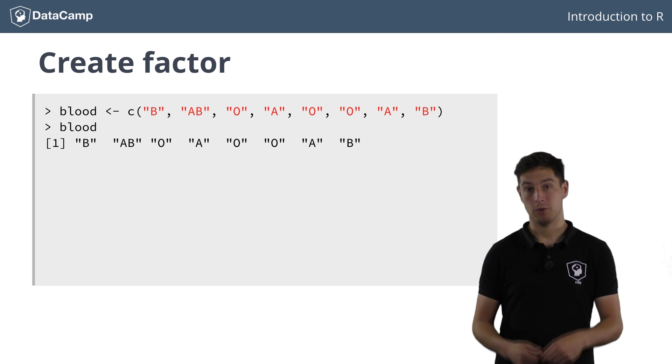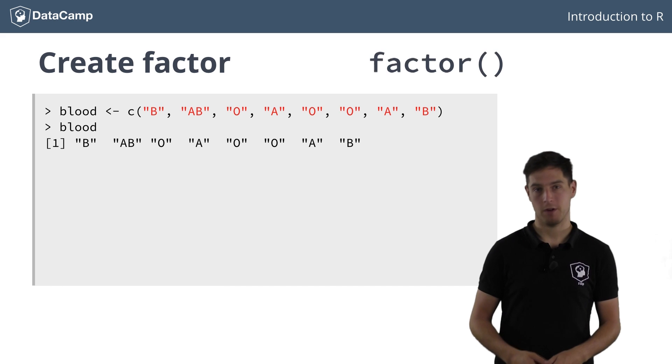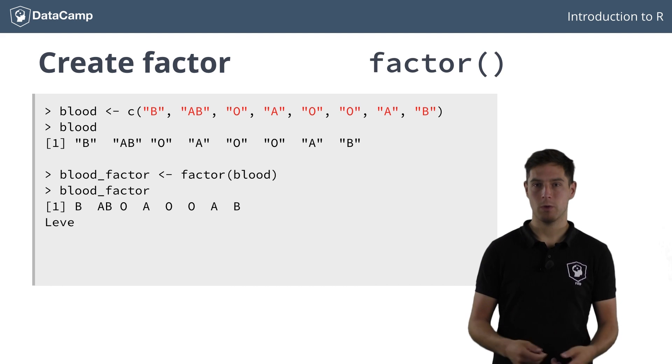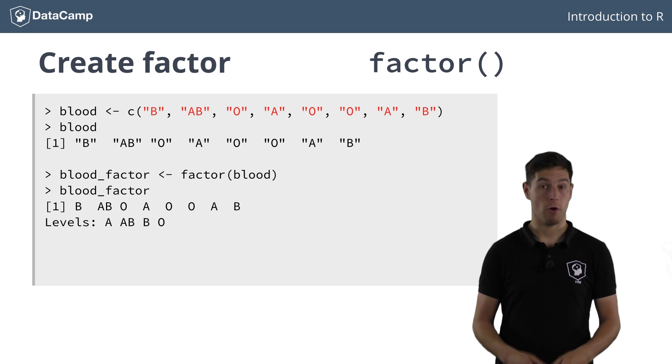To convert this vector to a factor, you can use the factor function. The printout looks somewhat different than the original one, there are no double quotes anymore and also the factor levels, corresponding to the different categories, are printed.